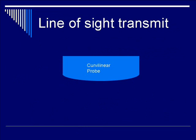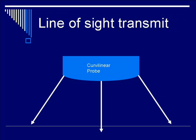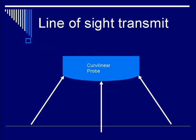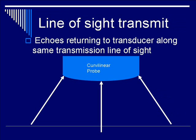The next assumption we will discuss is line-of-sight transmission. When a transducer emits ultrasound beams towards the reflectors of interest, you expect that echoes return along the same beam direction. However, in clinical and actual cases, this is not always true. In the next slides, we'll discuss that images often come back from outside the line-of-sight.